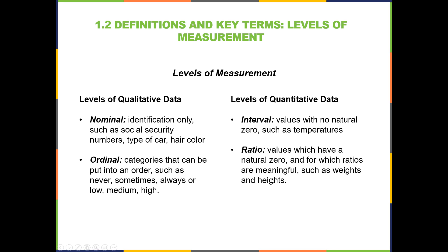Then we also have ratio level for quantitative data. These are values which do have a natural zero, and that makes the ratios meaningful — that's why it's called ratio. Weights and heights are good examples of ratio data. I always remember because there's an O on the end that looks like a zero — that's how I remember which one has the natural zero.